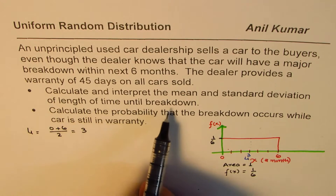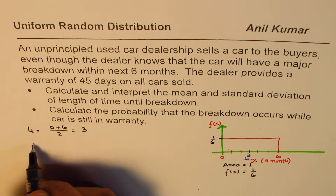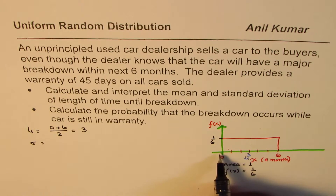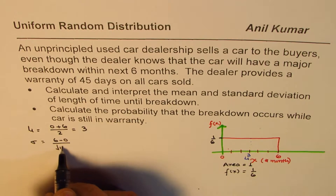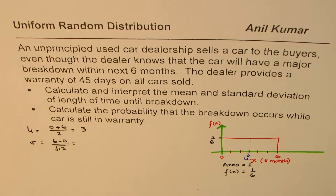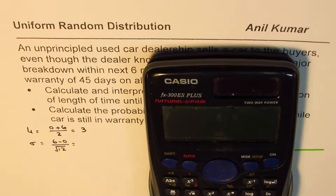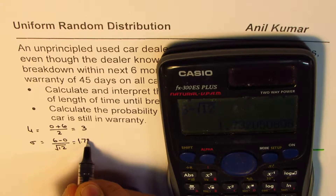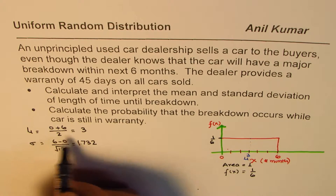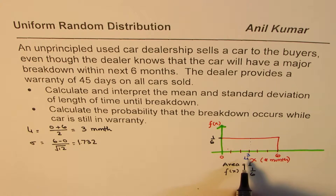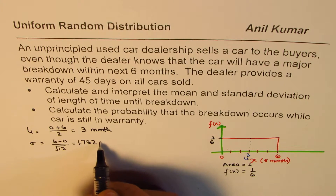The standard deviation of the length in time until it breaks down uses the formula: the duration divided by square root of 12. So it is (6 minus 0) divided by square root of 12. Calculating this, it is 6 divided by square root of 12, which equals 1.732. So 3 months is the mean for breakdown and the standard deviation is 1.732 months.